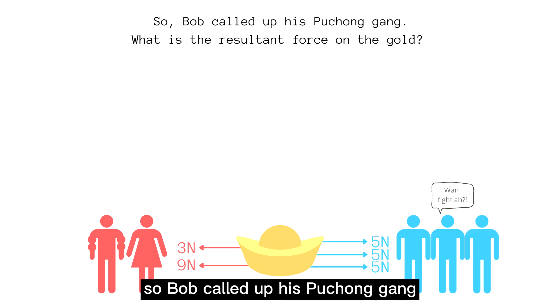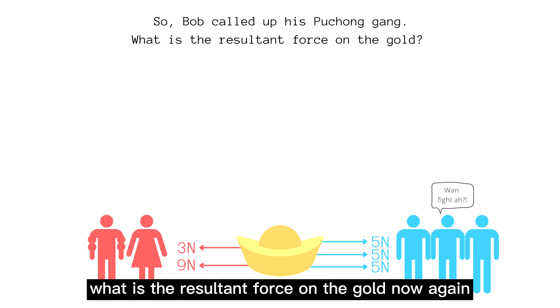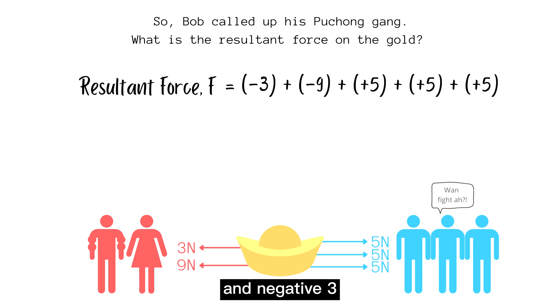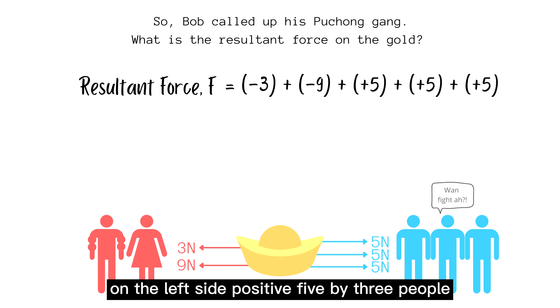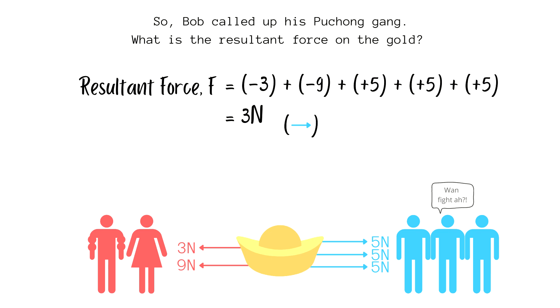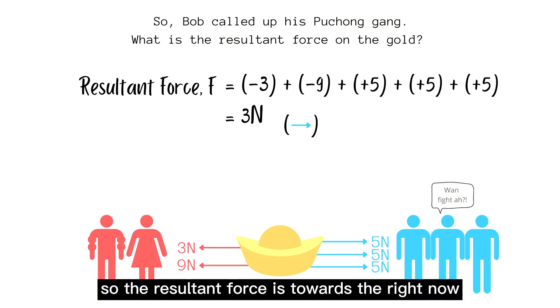So Bob called up his Puchong gang. What is the resultant force on the gold now? Again, I just have to add up the forces according to their direction. Negative 9 and negative 3 on the left side. Positive 5 by 3 people on the right side. The result is 3 Newtons, which is a positive number, so the resultant force is towards the right.